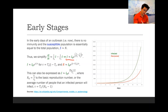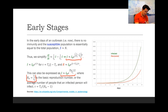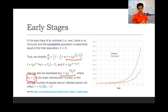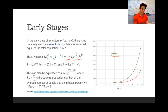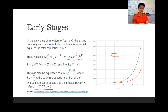Now the number of people who are infected can also be expressed in a form where we introduce a variable called R0, which is the ratio of the average time spent being infectious divided by the average interval by which infectious people will spread the disease. We call R0 the basic reproduction number, or the average number of people that an infected person will infect. With this representation, the time constant is equal to the average time spent being infectious divided by R0 minus 1.